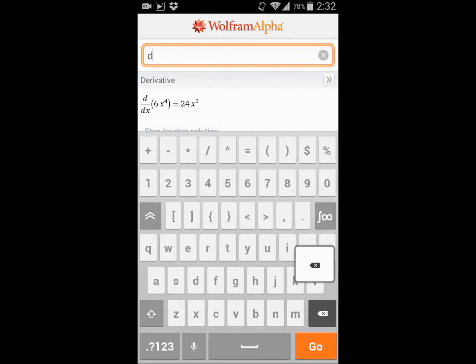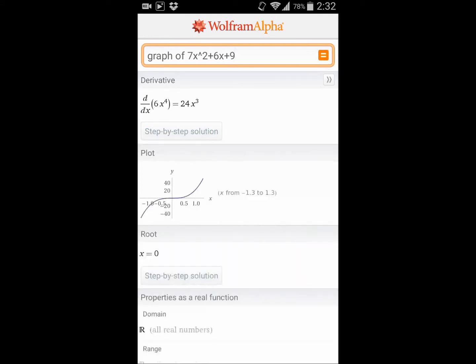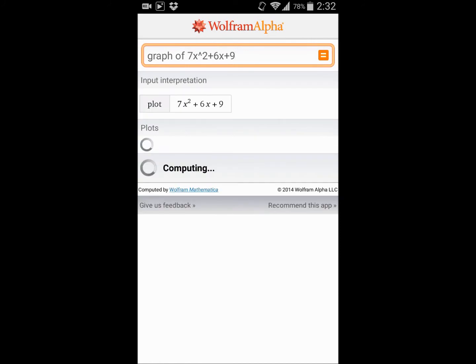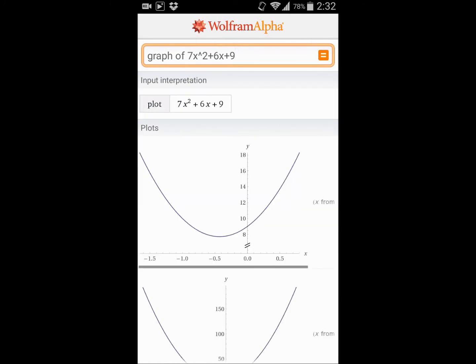You can graph things. Let's say graph of 7x squared plus 6x plus 9, and it tells us basically, you can type in how many... there's no limit to how much you want to do.